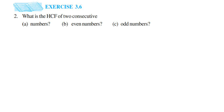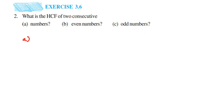Hey everyone, here I am doing exercise 3.6, second question. The question is: what is the HCF of two consecutive numbers? Second is even numbers, and third is odd numbers. So the first question — HCF of two consecutive numbers. Consecutive means the numbers which come one after the other, like 4, 5 or 7, 8 or 10, 11, 13, 14, like that.